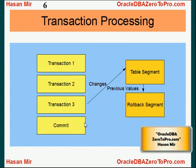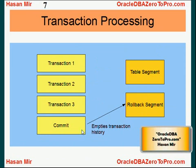At this point the user can issue either a commit command or a rollback command. If the user issues a commit command, Oracle knows that whatever information has been stored in the rollback segment is no longer needed — because we don't need to store previous values anymore since we won't be rolling back the work. So Oracle empties the transaction history from the rollback segment and the changes are marked as finalized in the actual table.